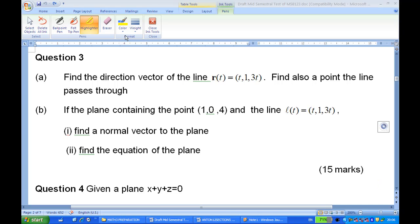We are going to find the direction vector of the line r(t) = (t, 1, 3t) and also find a point the line passes through.